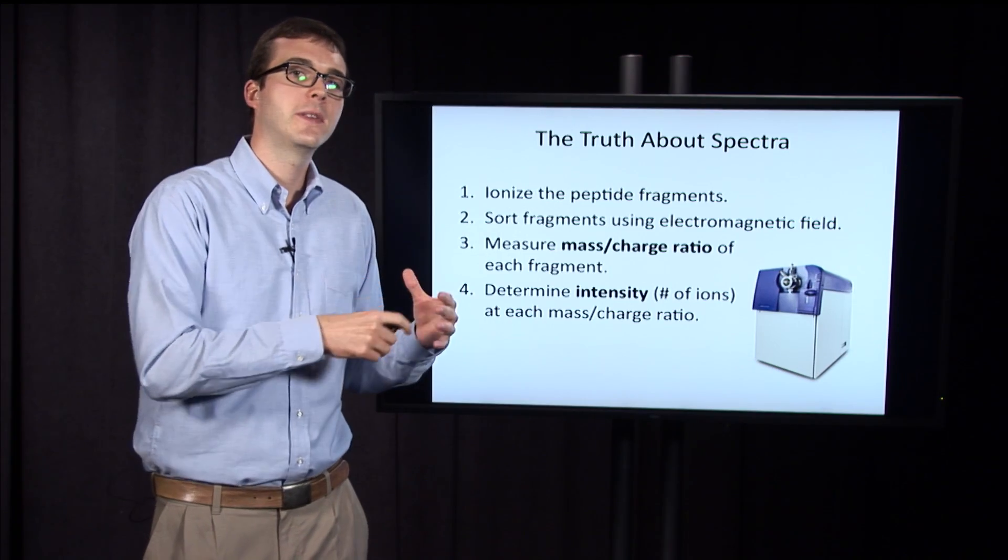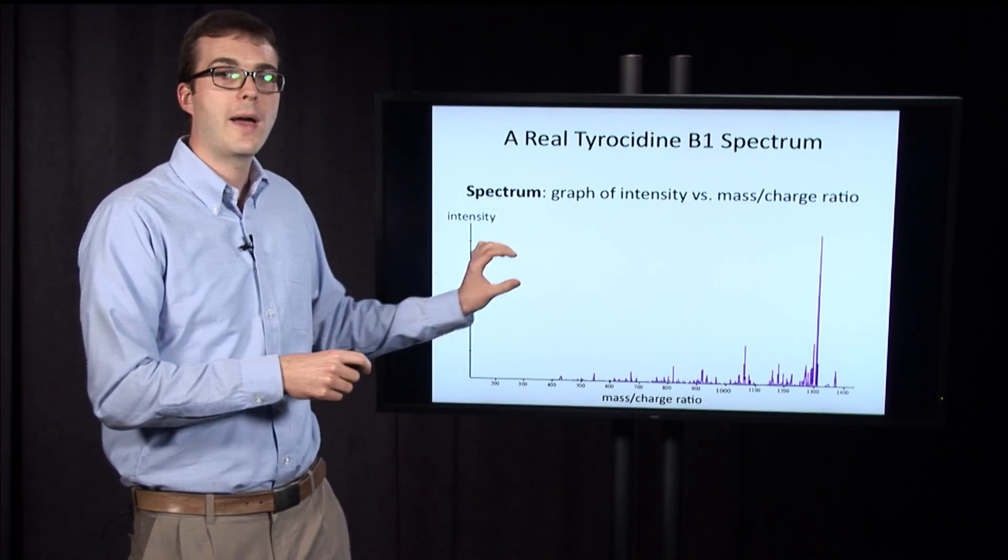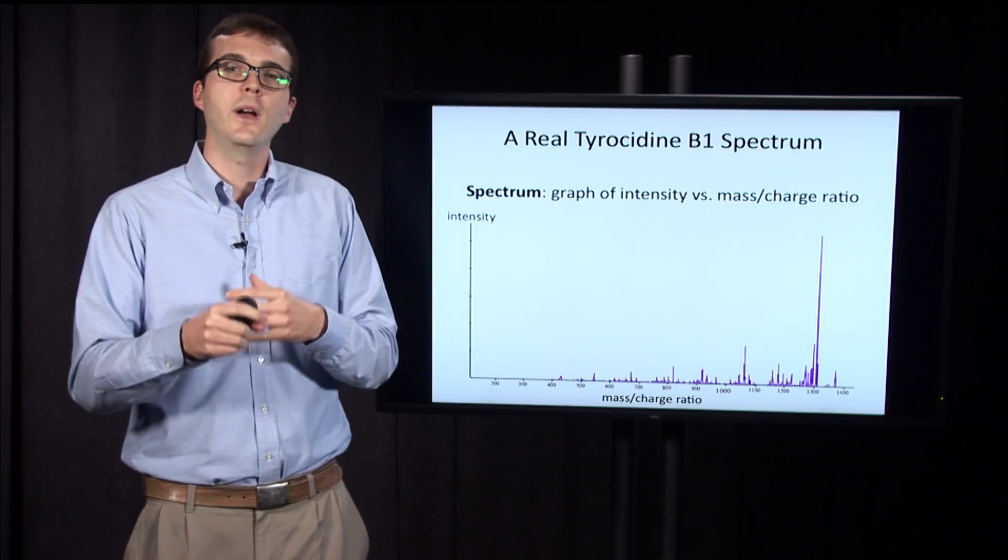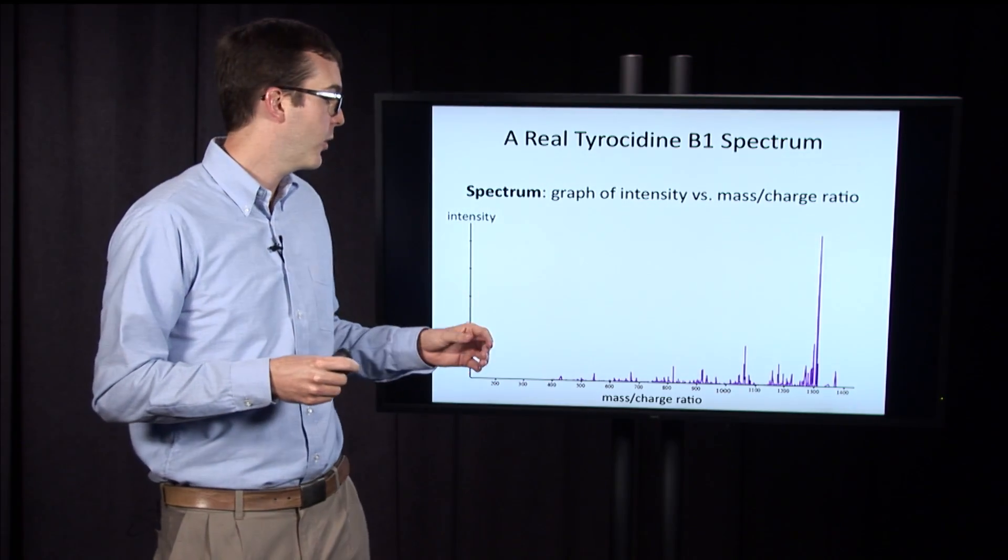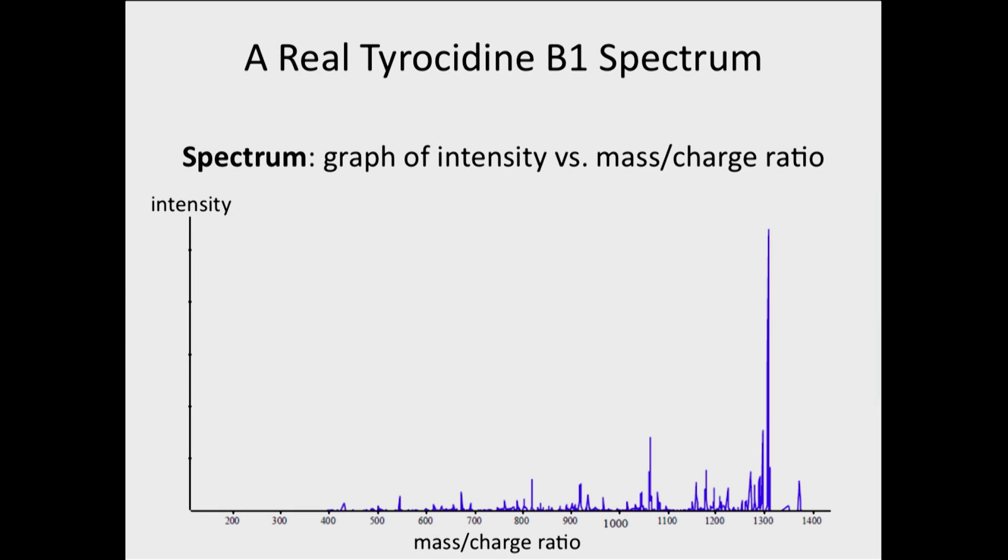After it determines this intensity at each mass charge ratio value, we're able to create a graph from this. And so this is really what the spectrum is. The spectrum is a graph of the intensity on the y-axis and the mass charge ratio on the x-axis.